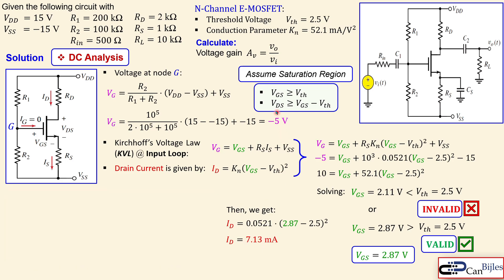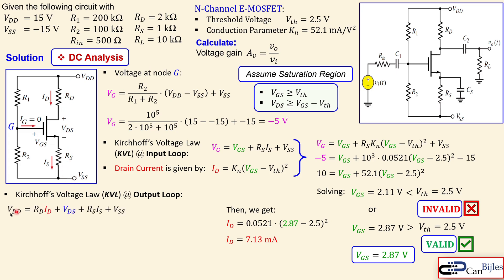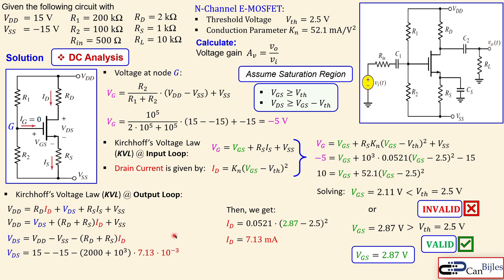We also verify the second saturation condition by applying KVL around the output loop: VDD = VRD + VDS + VRS + VSS. Since IS = ID, we group RD and RS together, then solve for VDS, which gives VDS = 8.61 V.